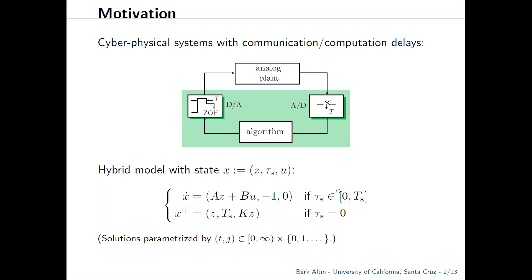So in between samples, when the sampling timer belongs to this interval with Ts representing the sampling period, the timer is going to count down with a constant rate while the zero-order hold input u stays constant, and the plant state evolves according to the linear differential equation az plus bu.